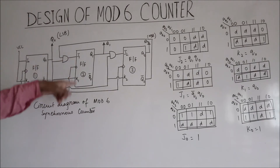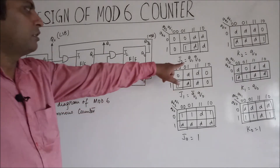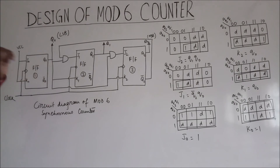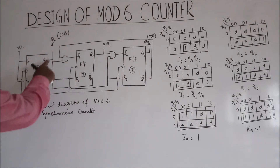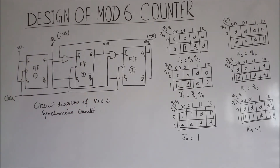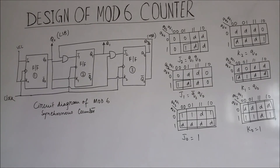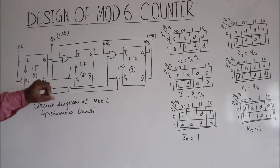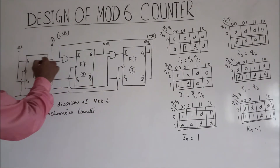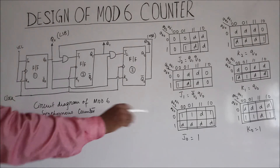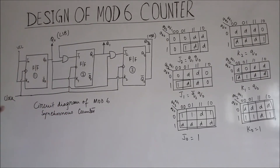For flip-flop 2, J2 equals Q1·Q0 and K2 equals Q0. And J1 equals Q2-bar·Q0, and K1 equals Q0. Since we have used a synchronous counter, the clock pulse is provided to all flip-flops simultaneously.